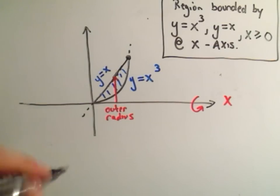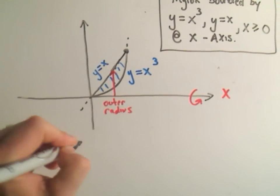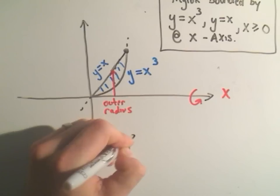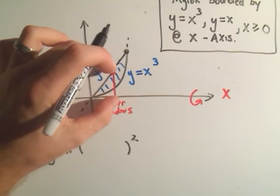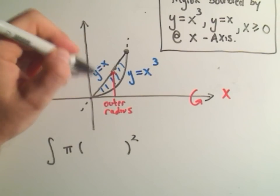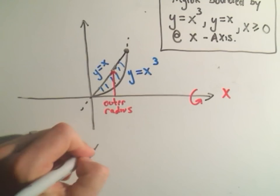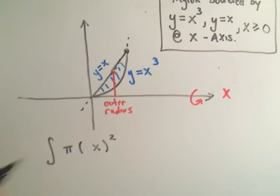So we'll figure out the limits of integration here in just a second, you might be able to even just guess them here. So the outer radius, if I'm at some random x coordinate, well the length of this arrow would come from the y value which is just coming from the function. So the outer radius would be just x squared.